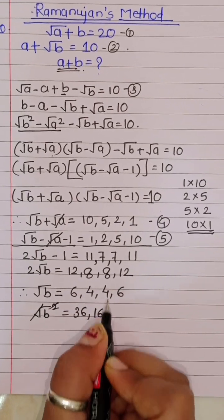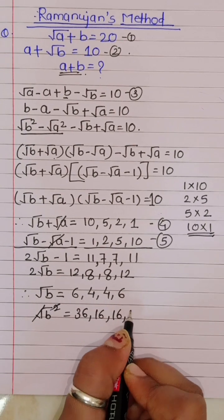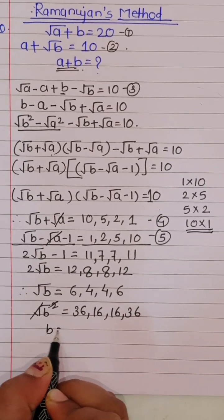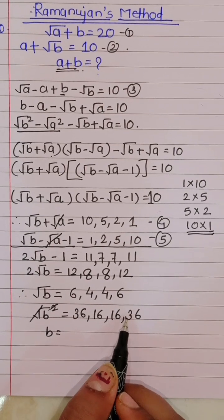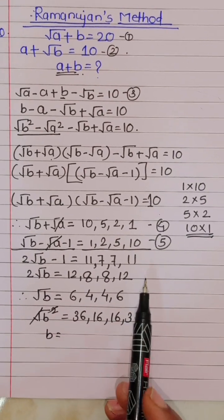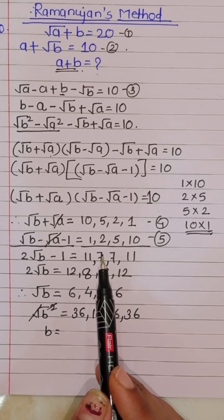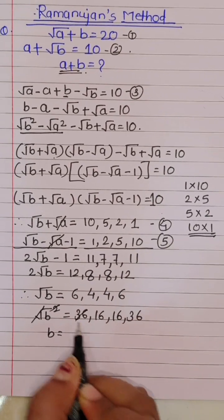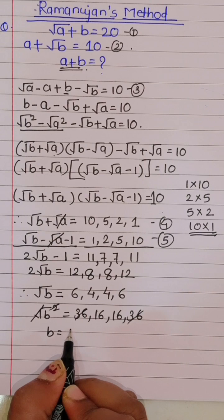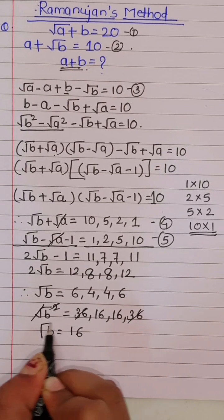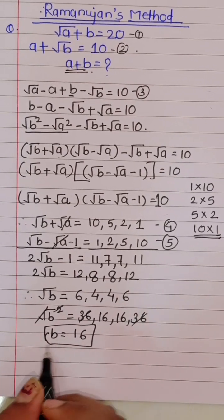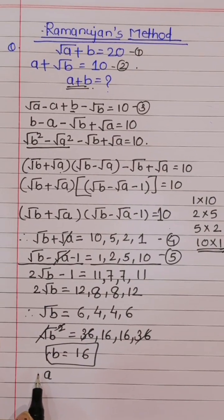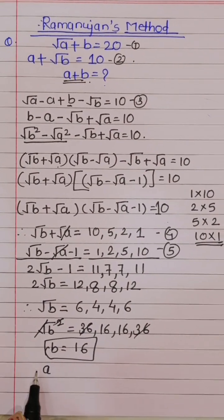However, b equals 36 is not possible because from equation 1, square root of (a plus b) equals 20, so b cannot be 36. Therefore b is equal to 16.